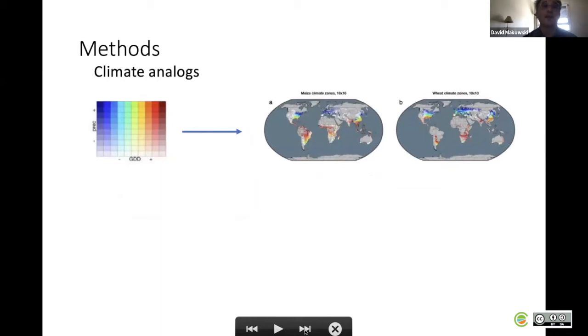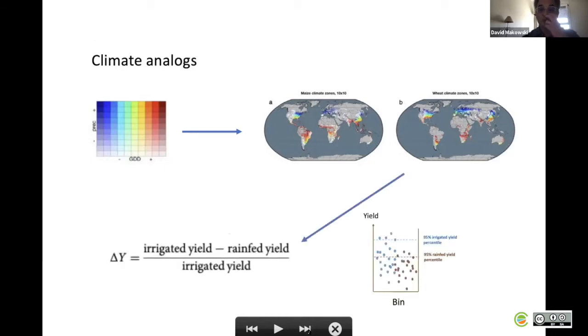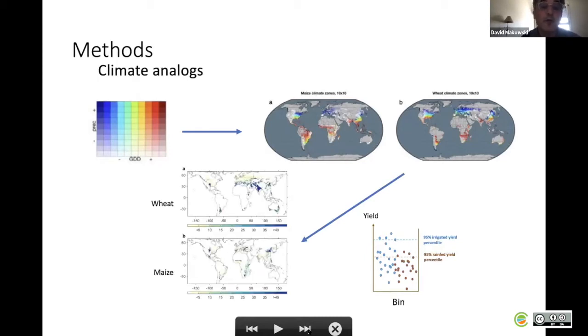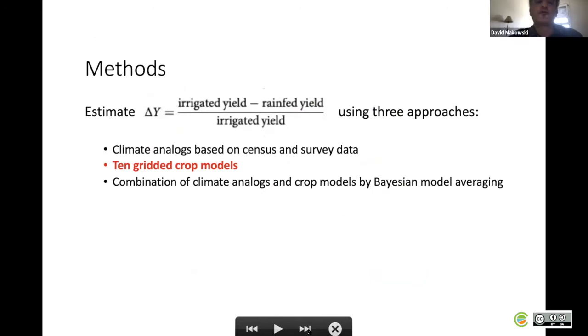We collect all the yield data for each one of these bins, compute the percentiles, and then compute the yield gap for each one of these 100 geographical areas. We obtain two maps of yield gap, one for wheat and one for maize. This is the first approach to estimate the yield gap due to lack of irrigation.